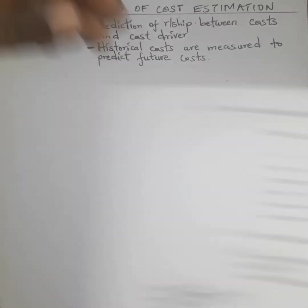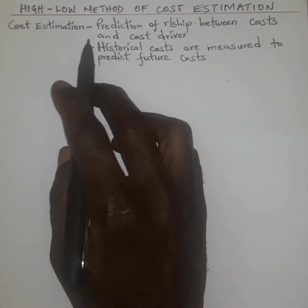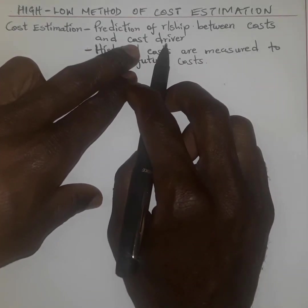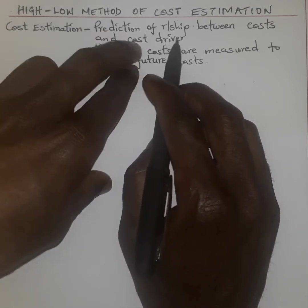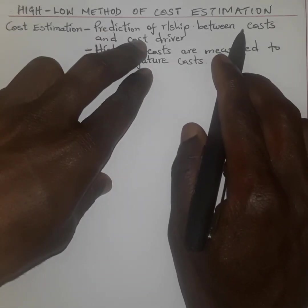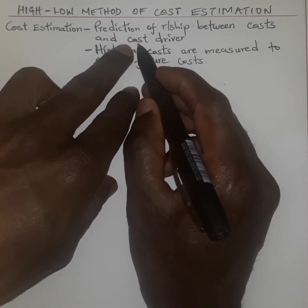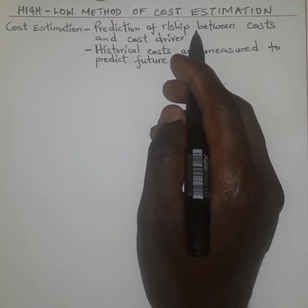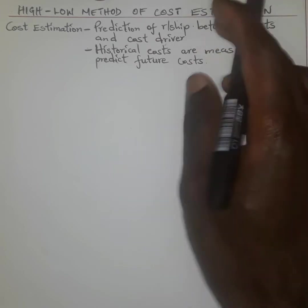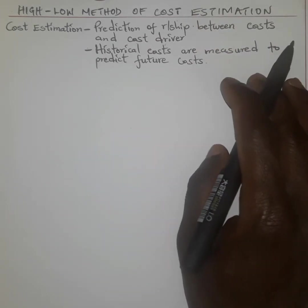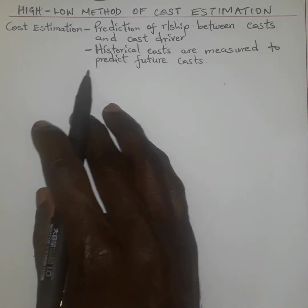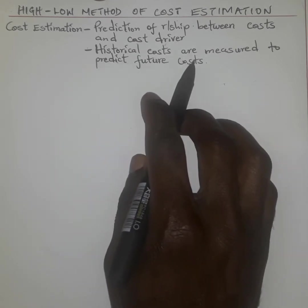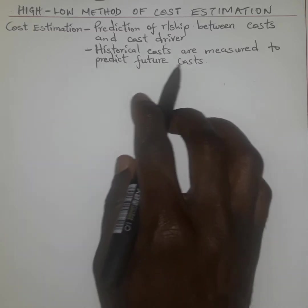When we talk about cost estimation, we are talking about the prediction of the relationship between costs and cost drivers. We are trying to approximate whether there is any association between cost and cost drivers. Cost drivers refer to the items that lead to the occurrence of cost — they must be present for a cost to be incurred. In cost estimation, we normally use historical costs to predict future costs.